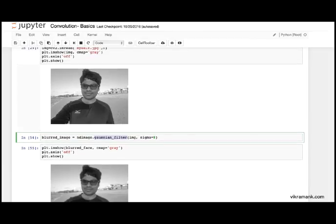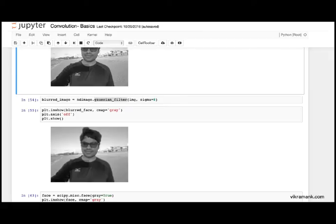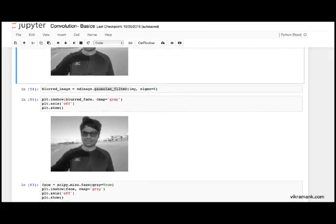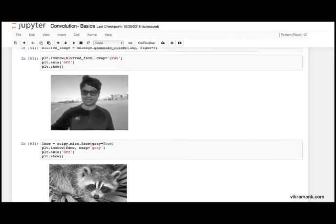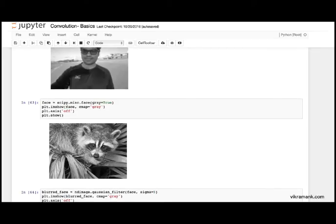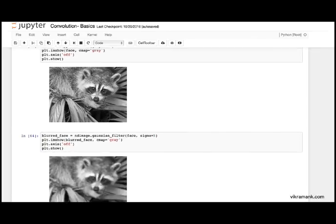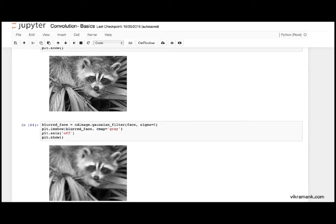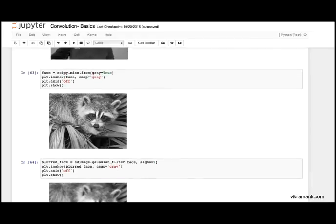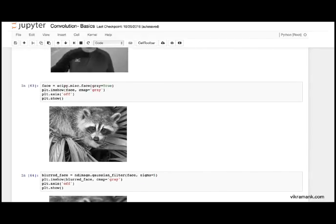Here you can see very sharp edges but after convolution the edges are blurred out. And this is an example for convolutional operation.